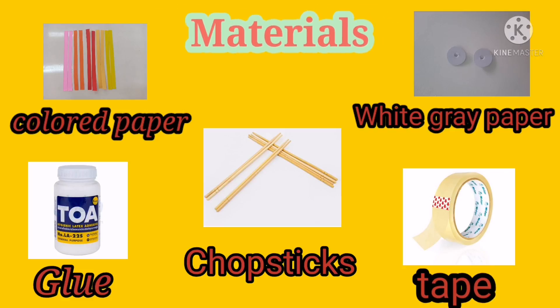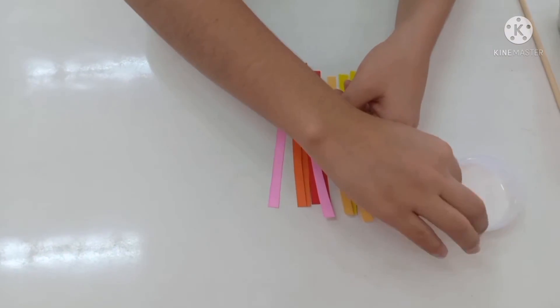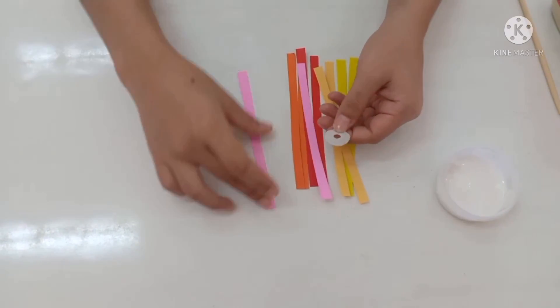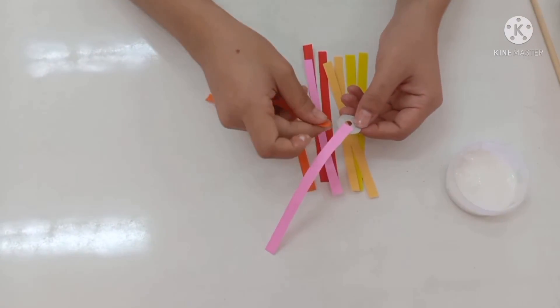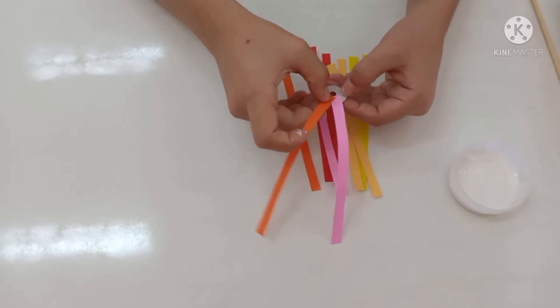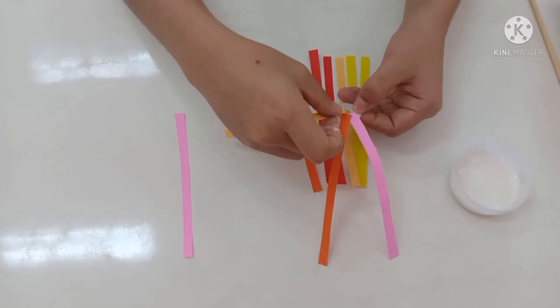Now, let's get started. First, we're going to take our white paper and make a circle. Then, we're going to cut the colored paper into strips.